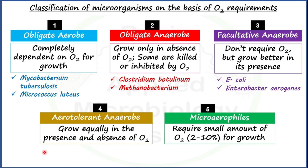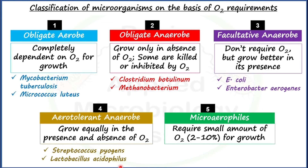For aerotolerant anaerobs, Streptococcus pyogenes — the causal agent of septic sore throat — is one example, and Lactobacillus acidophilus, a well-known starter culture for producing acidophilus milk, is another. One additional point: aerotolerant anaerobs can grow equally with or without oxygen, but their growth is sometimes more favored when carbon dioxide concentration is increased in the medium.